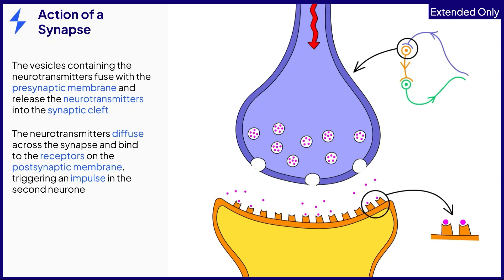The neurotransmitters move through the process of diffusion across the gap. When they reach the other side, they bind with the receptors on the postsynaptic membrane. This binding triggers the electrical impulse to occur and gets sent along the second neuron. After this, the neurotransmitters break away from the receptors and either break down or are recycled to be used again.